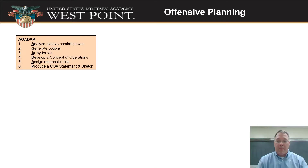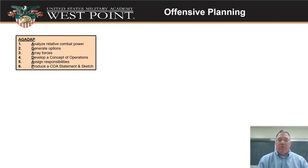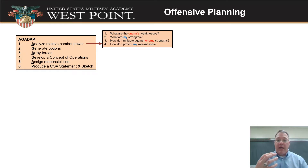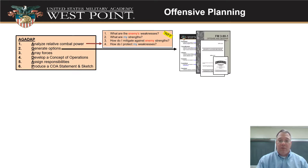I want to start off today with a little bit of review and show you where we've been going. We've learned about AGADAP, which is really our big process for doing course of action development. Step one, we're analyzing our relative combat power — asking what are the enemy's weaknesses, what are our strengths, how do we mitigate or protect our weaknesses, and how do we take advantage of the enemy's weaknesses and mitigate their strengths.